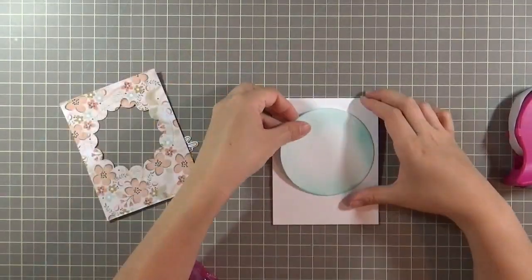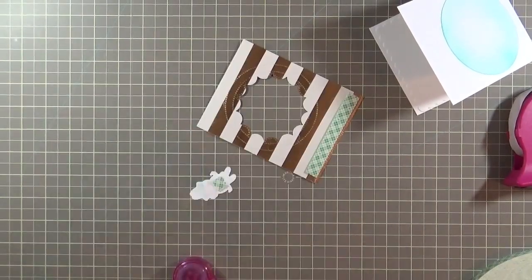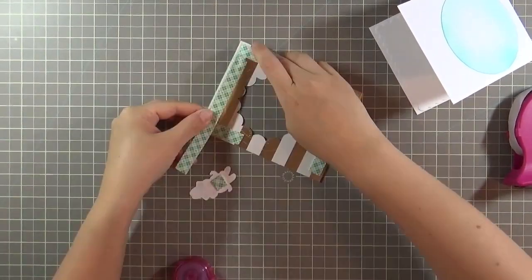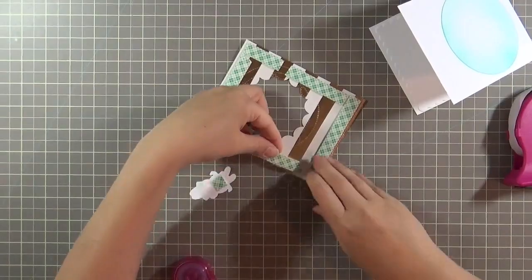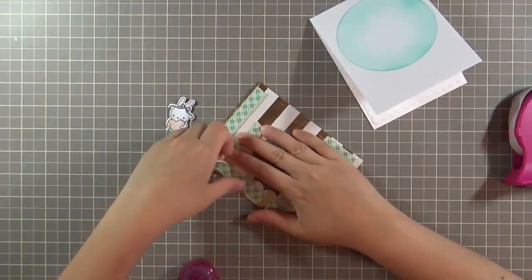Here I'm just adding that sky circle and a bunch of foam adhesive on the back of the pattern paper because I want it to stick out a little bit from the background.